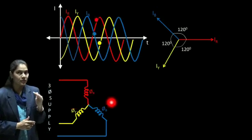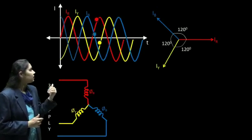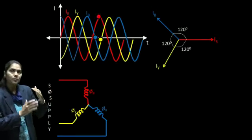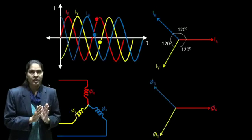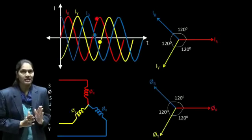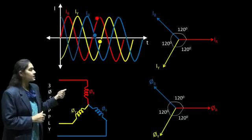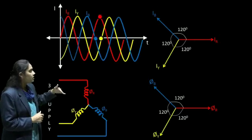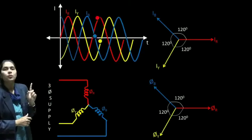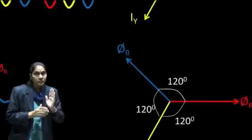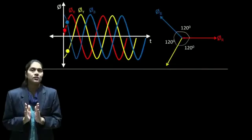Whatever fluxes we get, those are also apart from each other by an angle of 120 degrees, because we have placed our conductors at an angle of 120 degrees. Now we have three fluxes, and if we plot the phasors of these three fluxes, we get φR, φY, and φB apart from each other by 120 degrees. Now we have to check the nature of these fluxes.